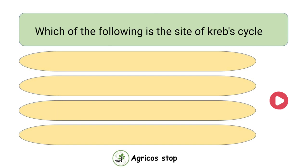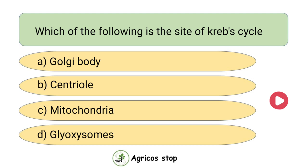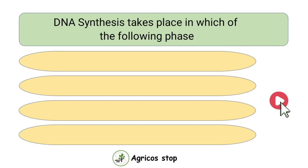Which of the following is the site of Krebs cycle? Options are Golgi body, Centriole, Mitochondria, and Glyoxysomes. The answer is Mitochondria. Mitochondria is the site of Krebs cycle.